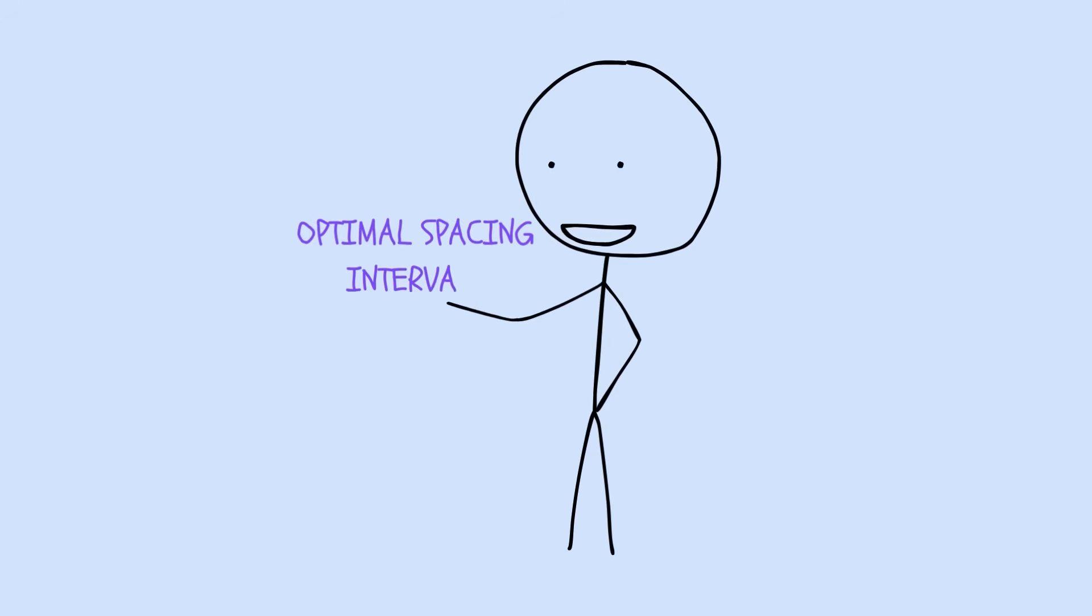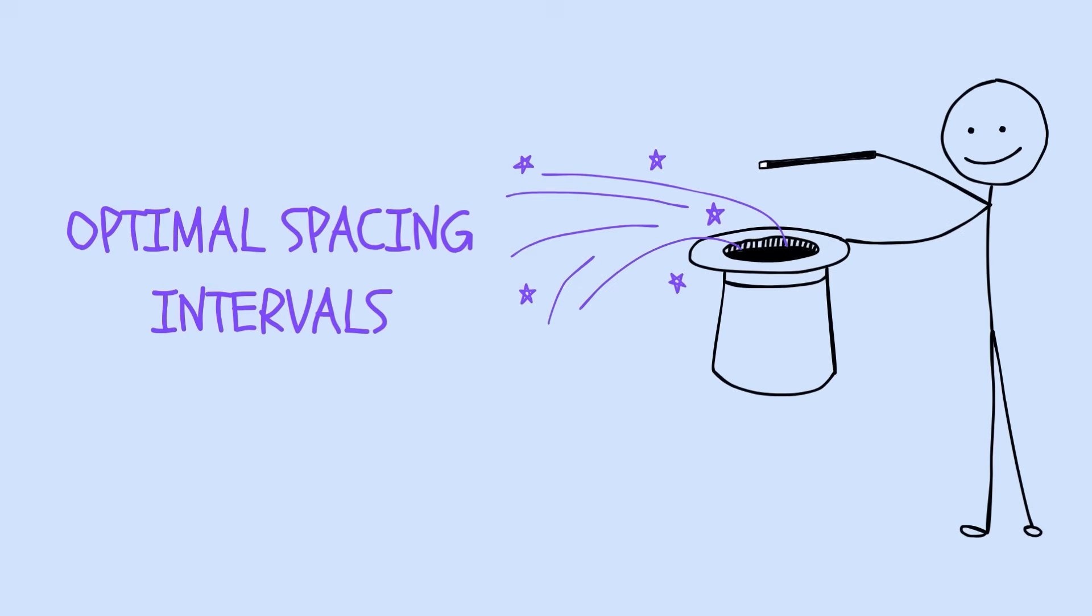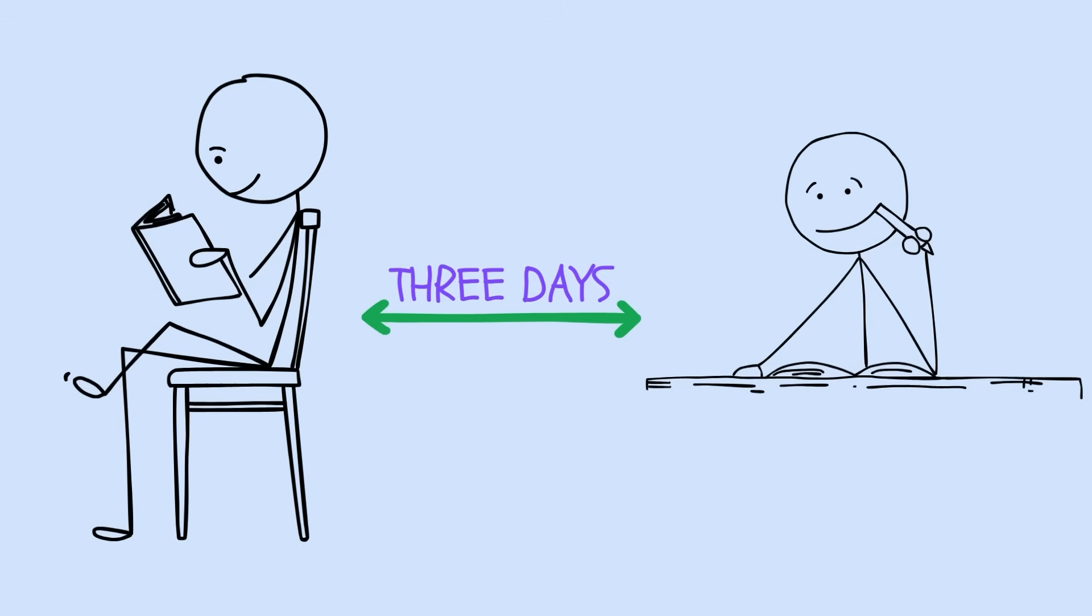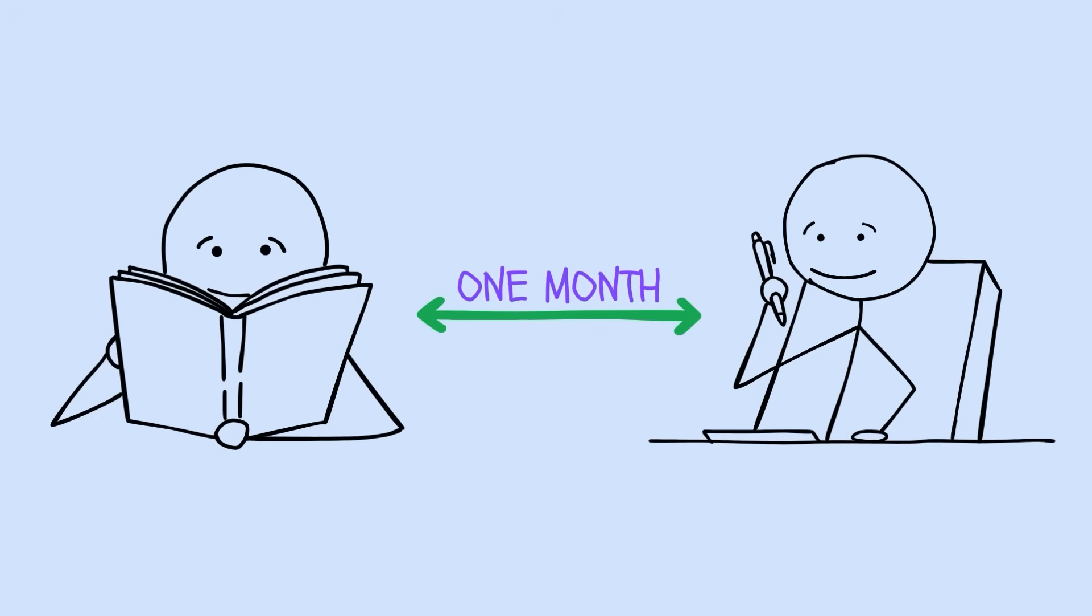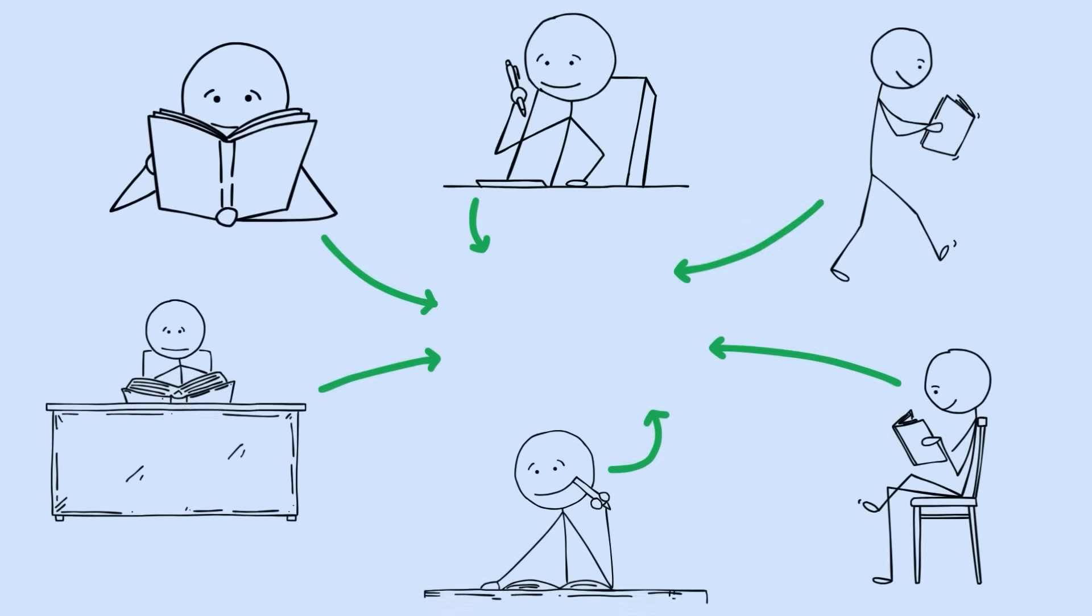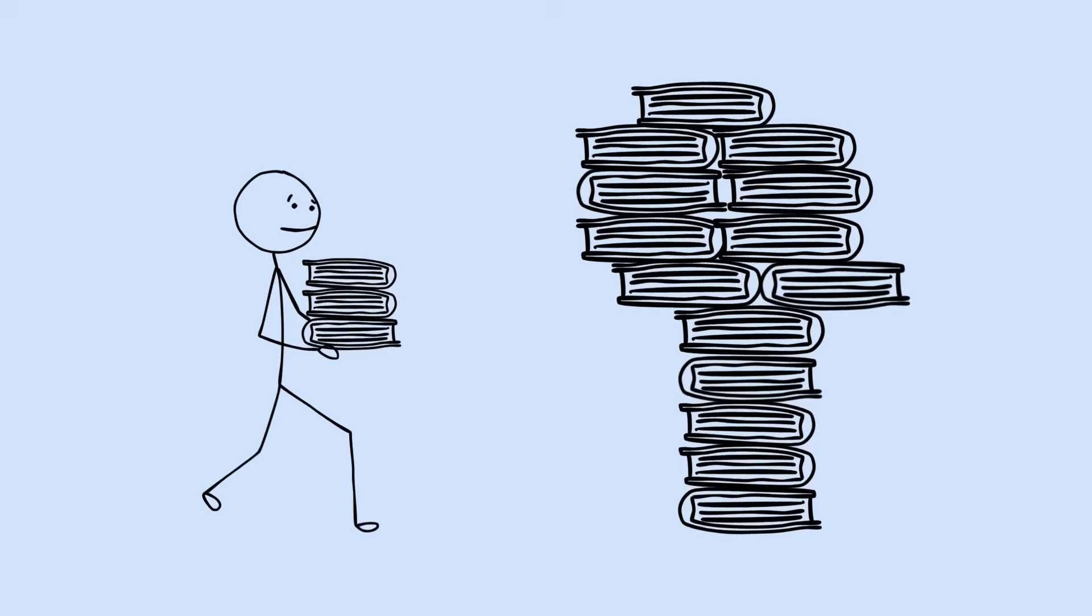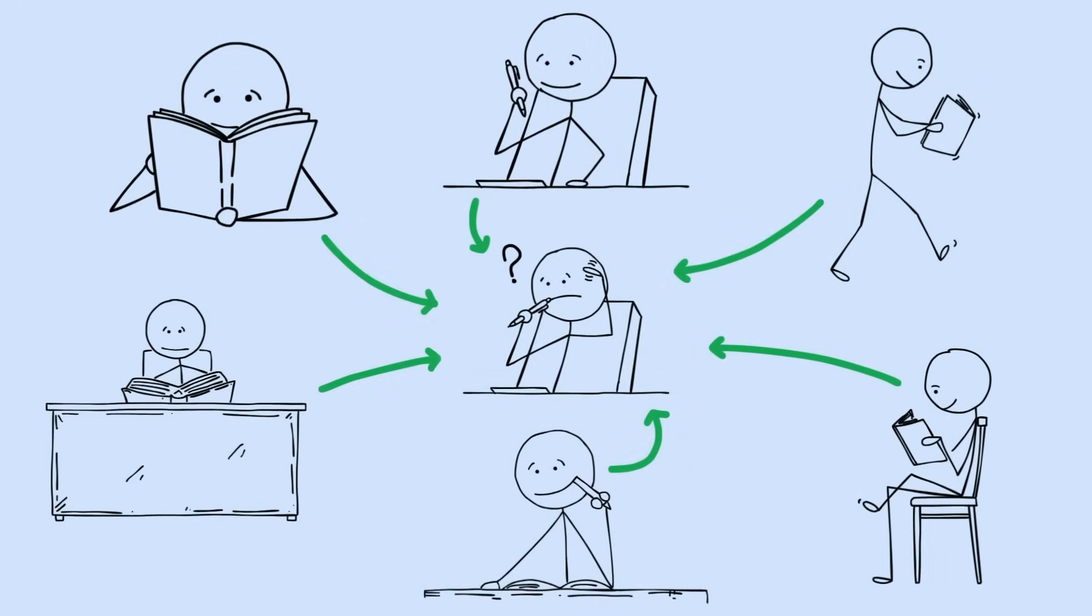The optimal spacing intervals sound almost magical. Review after one day, then three days, then one week, then two weeks, then one month. Each review should happen just as you're about to forget. The irony is perfect. We cram everything together and wonder why nothing sticks when the secret is spreading it apart.